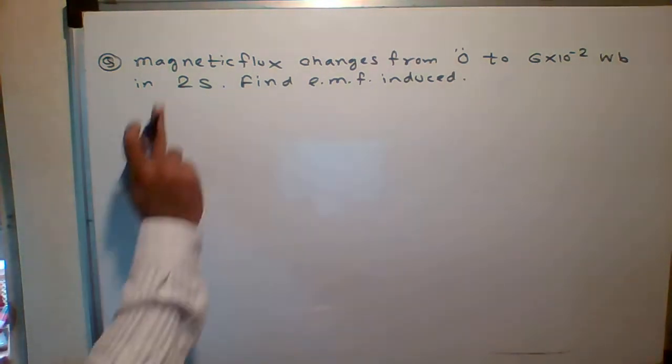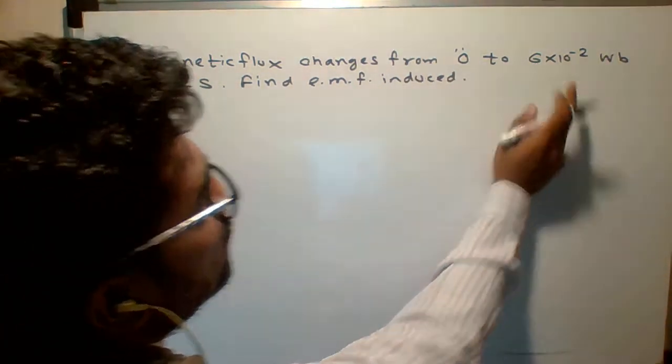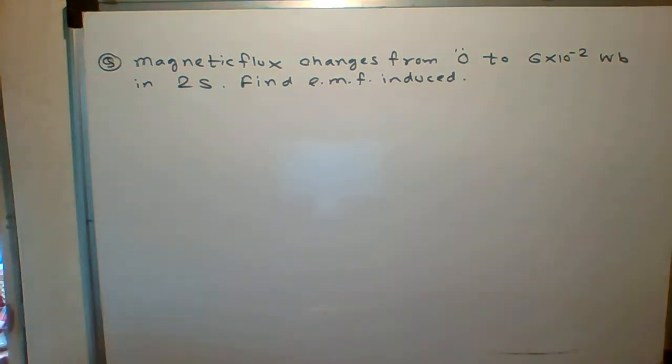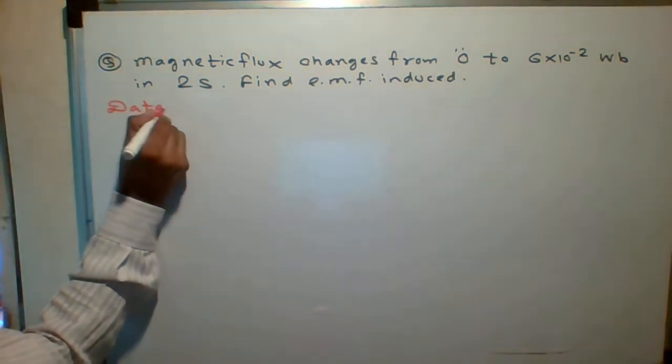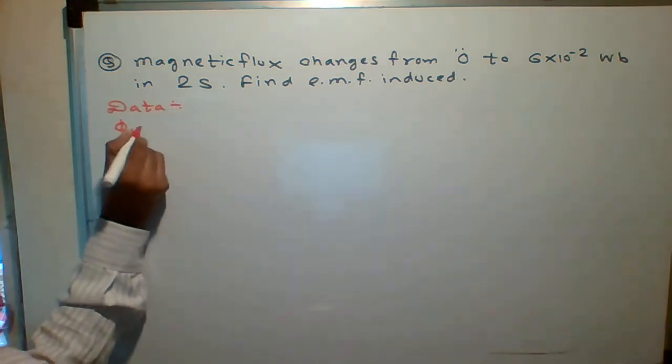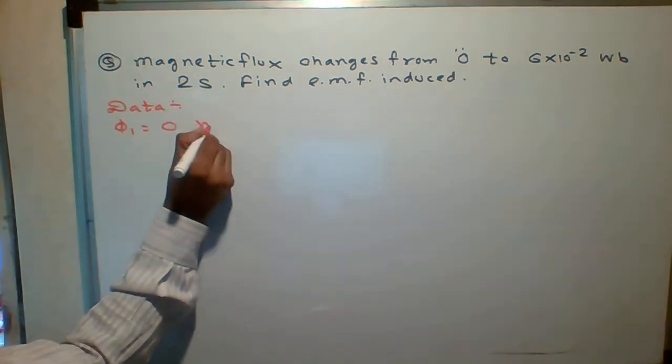So students, what is given? Magnetic flux changes from 0 to 6×10^-2 Wb. Let me write down the data. Data: Initial flux was 0 Weber.